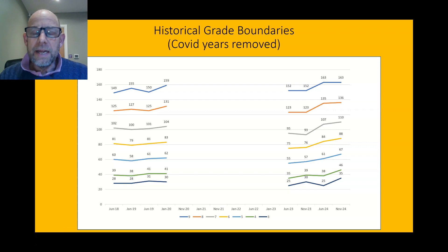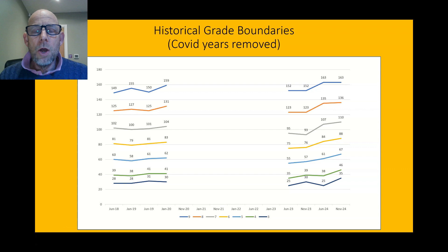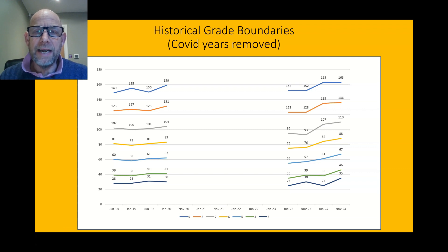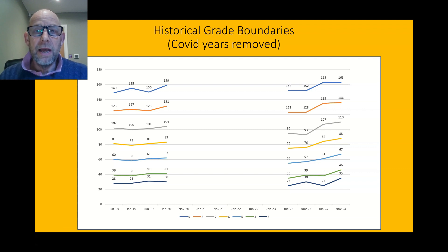What I'm predicting is that you'll need 163 marks out of 200 — so more than 80 on each paper on average — to get a grade 9. Around 136 (70 on both papers) for a grade 8, and 110 for a grade 7. In times gone by I thought about 100 would get you a 7, but I don't think it will anymore — I think you need to be looking at 110, so 55 on each paper.